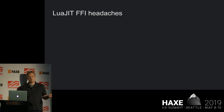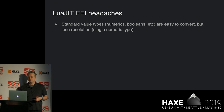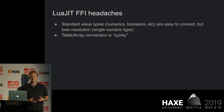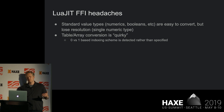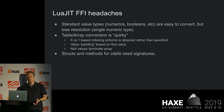Given how easy that is, there are some headaches when you try to ramp up the complexity of what you do with the C code. Standard value types are more or less easy to convert but lose resolution, so when you start doing high precision math you're going to hit some surprises. Table-to-array conversion is quirky because Lua only has tables — there's no first-class array in Lua. Lua has a one-based indexing scheme, which causes confusion. The FFI tries to detect that, does value padding to avoid passing a null array, and any nulls in the array terminate the array.